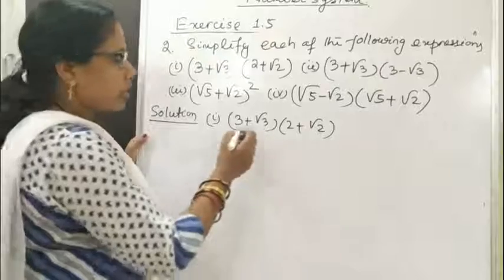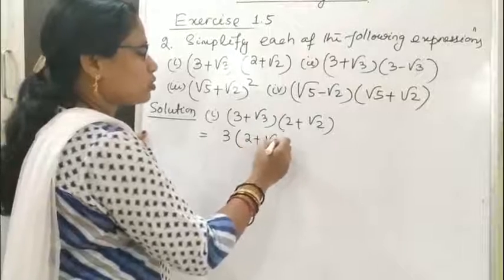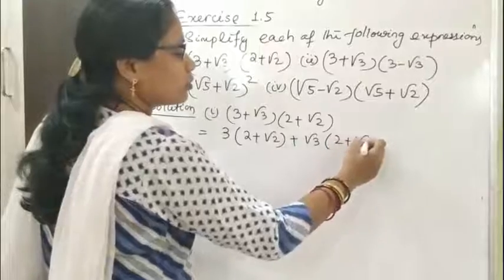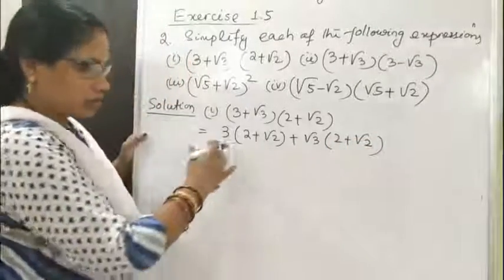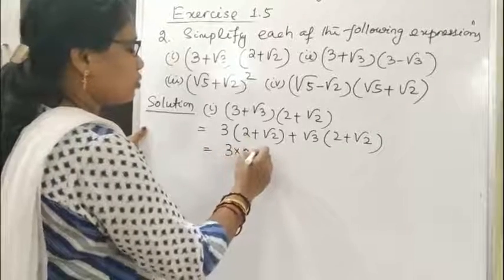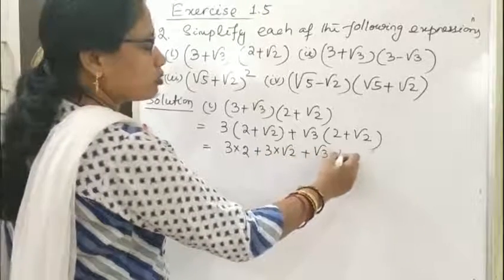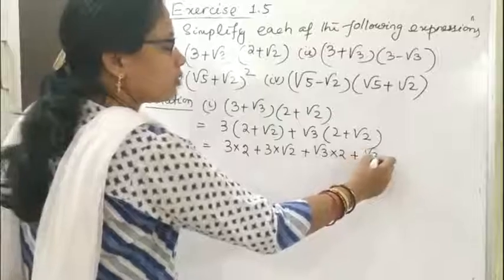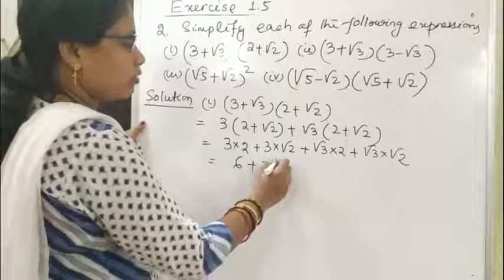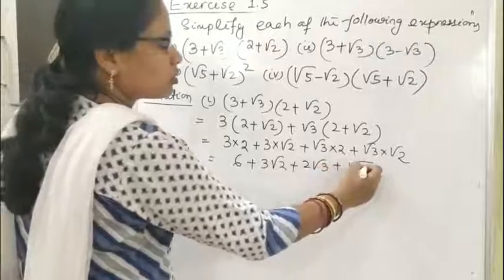Here we have to multiply. This equals 3 multiplied with (2 + √2) plus √3 multiplied with (2 + √2). Expanding: 3×2 + 3×√2 + √3×2 + √3×√2, which gives 6 + 3√2 + 2√3 + √6.